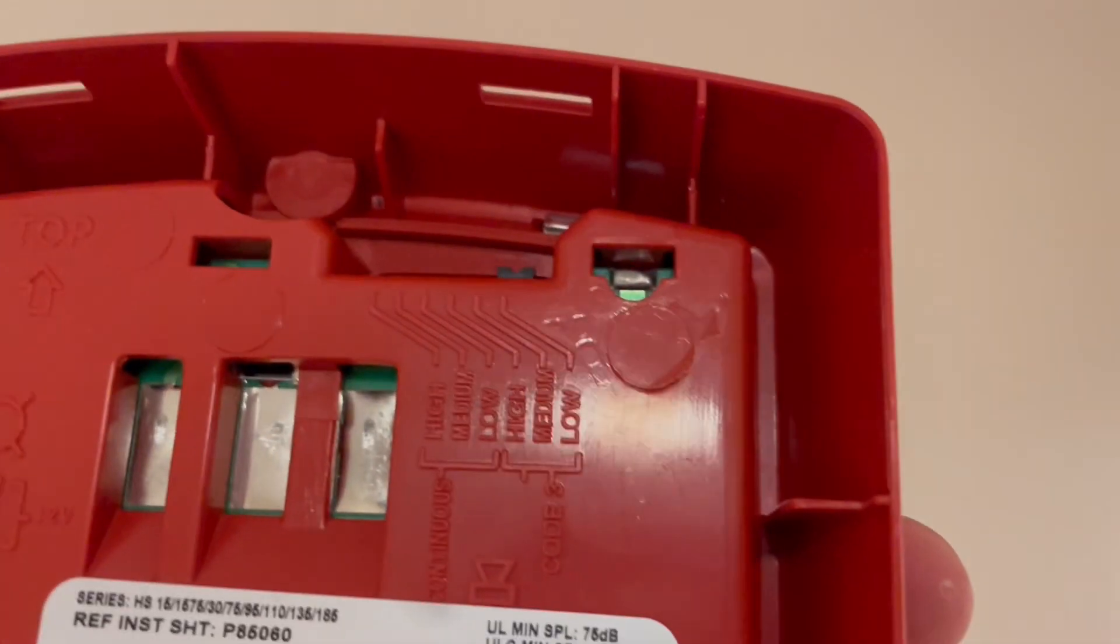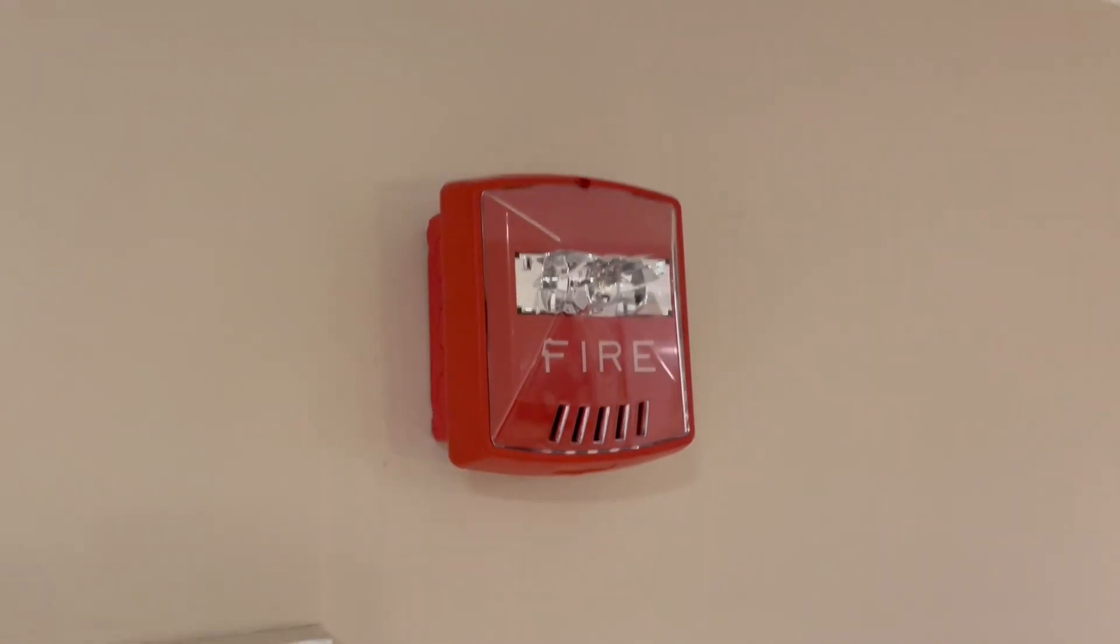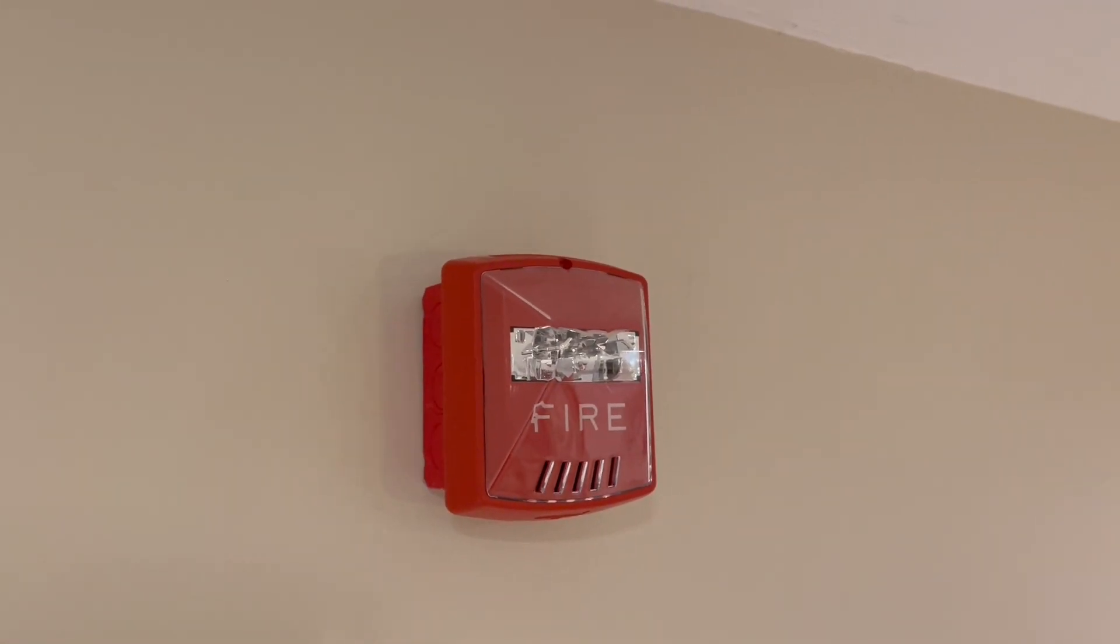Either way, now that this is installed nice and easy, what we're going to do is set our candela, which in this case I'm just going to do 15, and then also the volume selection. This is going to be code 3 low volume. So you just kind of hook it on the top there and then snap it on, and there you go. Really elegant looking device.